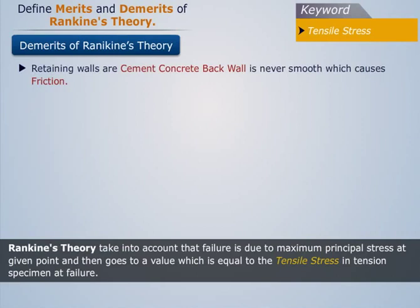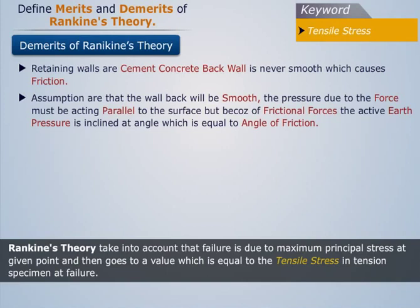Assumptions are that the wall back will be smooth and the pressure due to the force must be acting parallel to the surface. But because of frictional forces, the active earth pressure is inclined at an angle which is equal to the angle of friction.